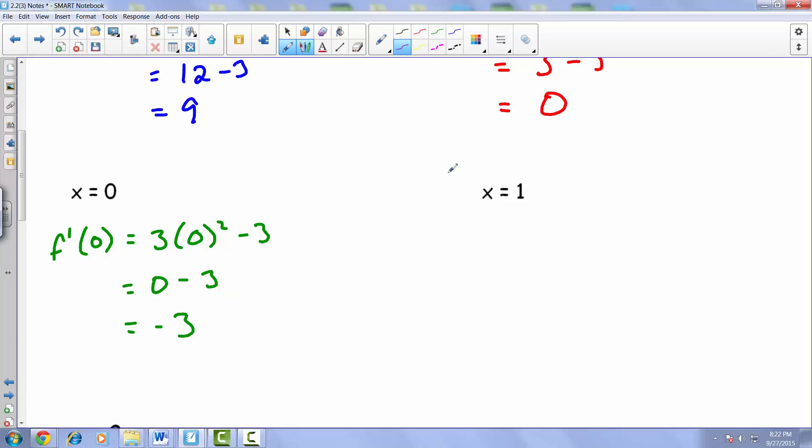f prime of 1, in other words, finding the tangent slope at 1 for that function, comes out to be 3 times 1 squared minus 3. 1 squared is just 1, times 3 is 3, minus 3. So it looks like that tangent slope is 0.